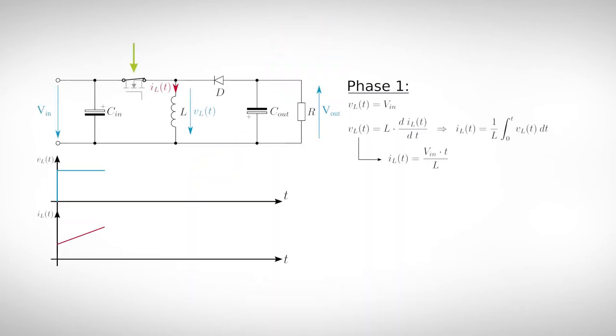Also, we treat our components as ideal. If the MOSFET is closed, the voltage over the inductor is equal to the input voltage. Constant voltage means a linearly rising current through it. Assuming the output voltage is stable at our desired value, the diode is in reverse direction and no current can flow through it.